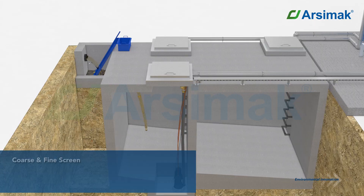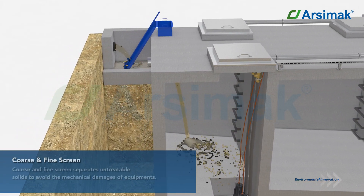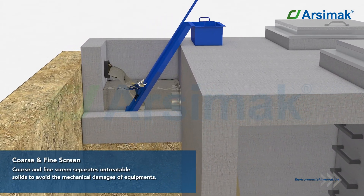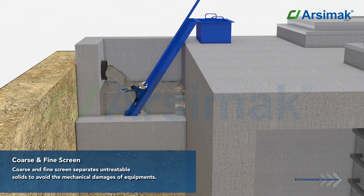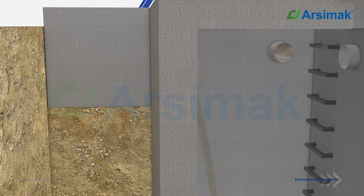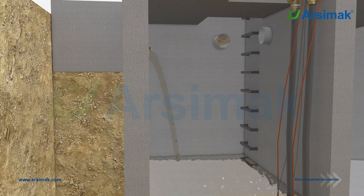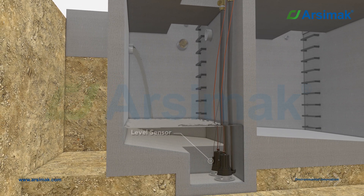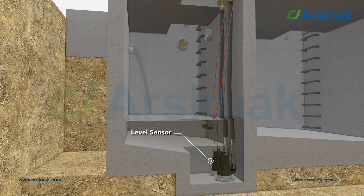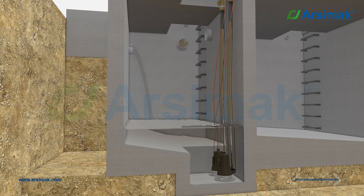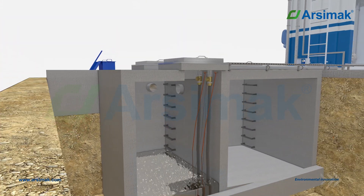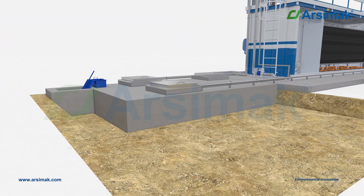Raw wastewater passing over the coarse screen enters the equalization tank. This equalization tank has two submersible pumps — one active and the other on standby. Activated by the signal from the water level switch, the submersible pump transfers the wastewater to the inlet of the EgoCycle reactor.